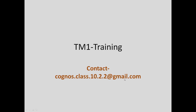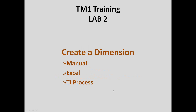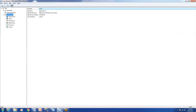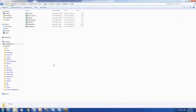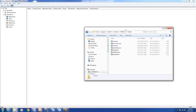There are three possible ways you can create a dimension in TM1. First is manually, then using Excel, and the third is TI process. Depending on the type of dimension you have as per your business requirement, you have to select the best option. We'll go through them one by one.